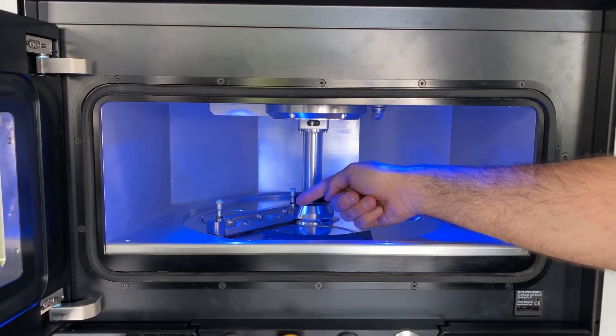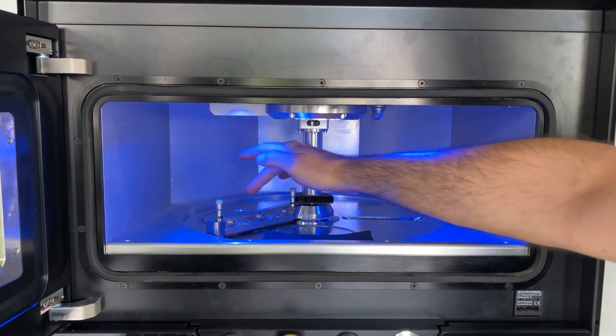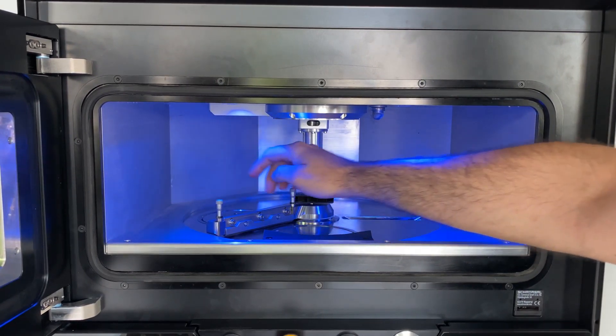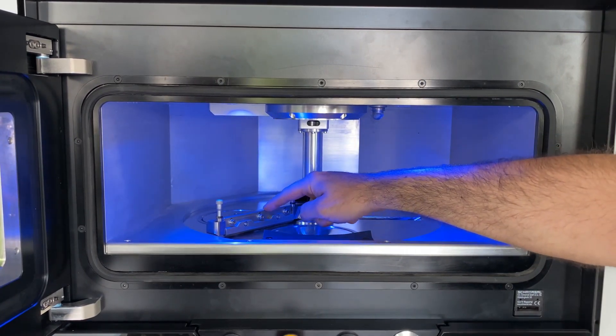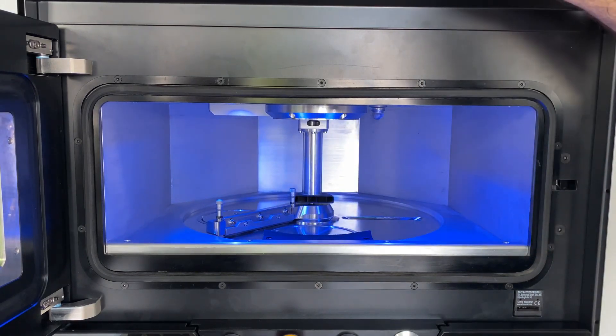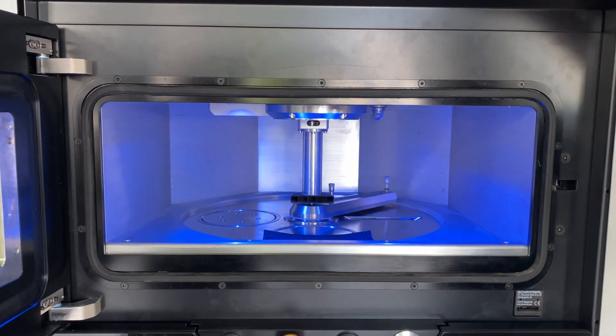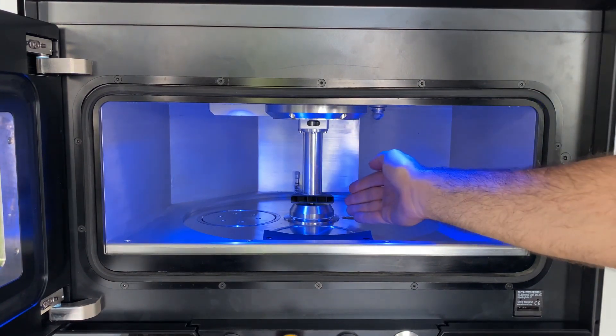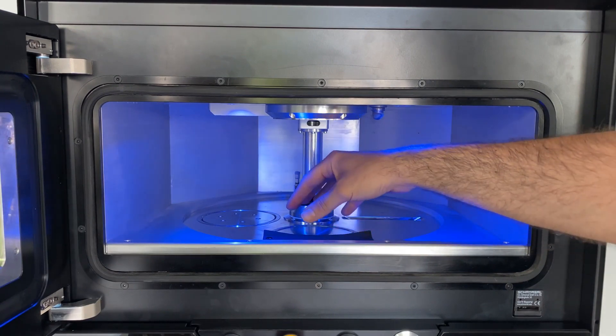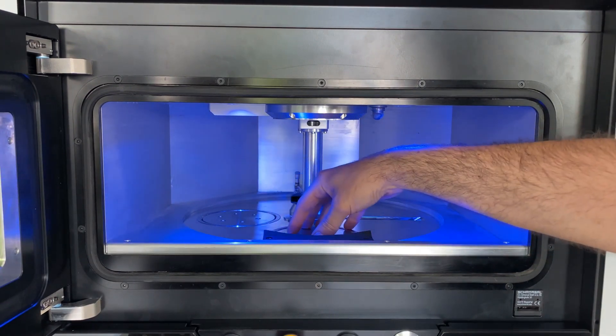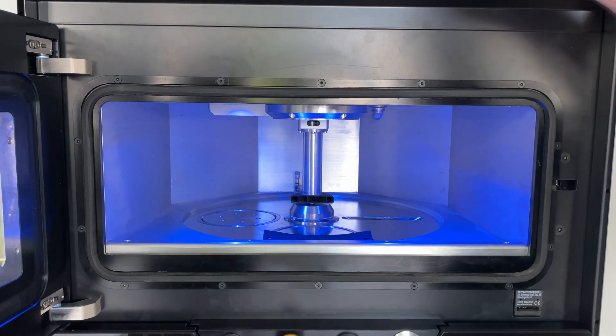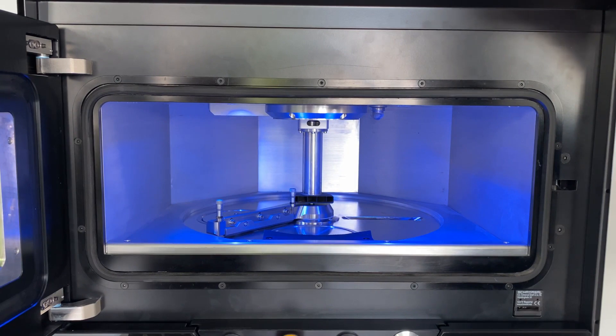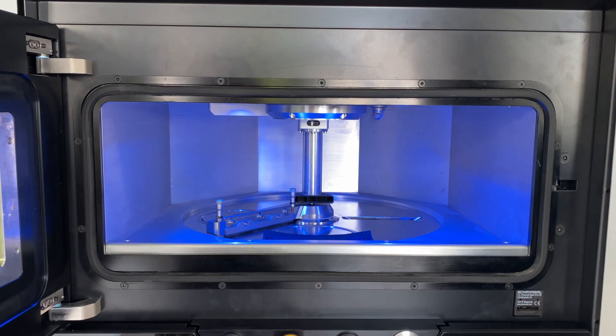Here you see, the coater is positioned right between the building platform and the powder platform, which is the regular position where it should always be. If you push the button I've mentioned earlier, the coater will go to the opposite direction, so you can put in powder or get your object out. If you push the button again, it will come right in front where it should be. Otherwise, you can move it freely with the other buttons.